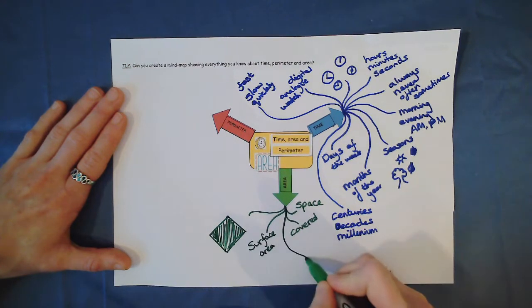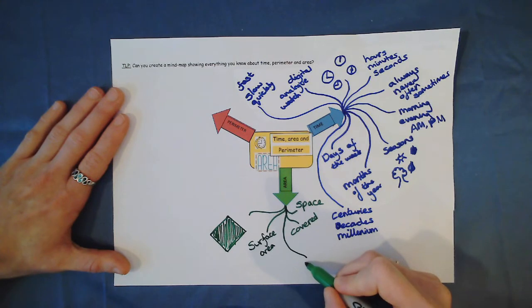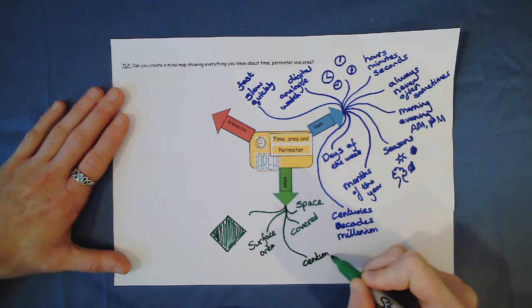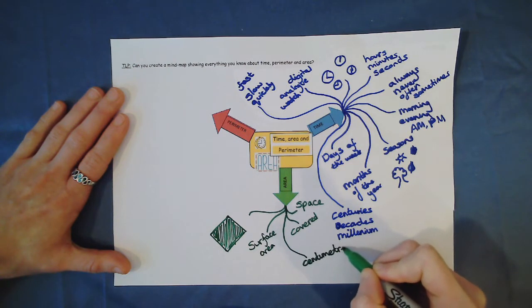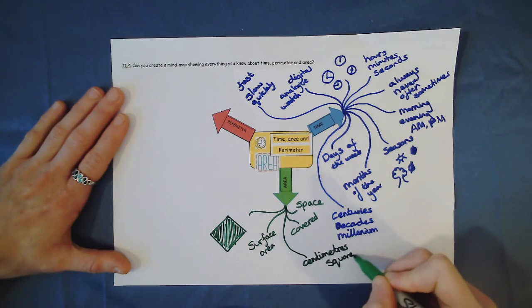We could call it surface area. And how might we measure area? Do you know? Yeah. In centimetres squared. We write that like this.